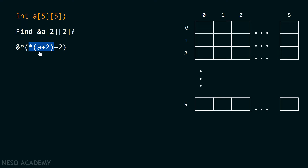Let's see what *(A + 2) gives us. A is the pointer to the first one-dimensional array — the name of the array in case of a two-dimensional array is always the pointer to the first one-dimensional array. If I add two to it, the pointer simply moves two positions forward, moving to the third one-dimensional array. In order to reach that one-dimensional array, I have to pass through all elements of two rows, and each row contains five elements. So two must be multiplied by five, giving ten — meaning I am passing through a total of ten elements.